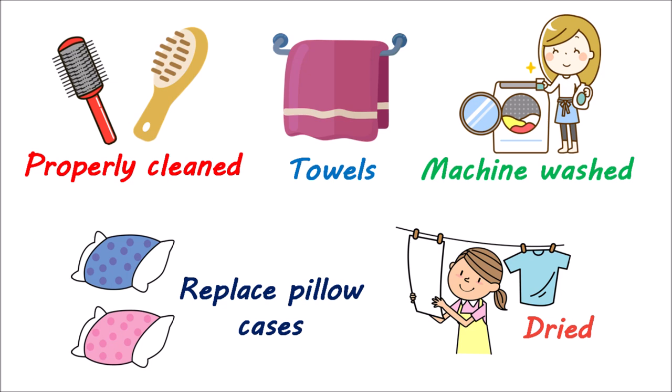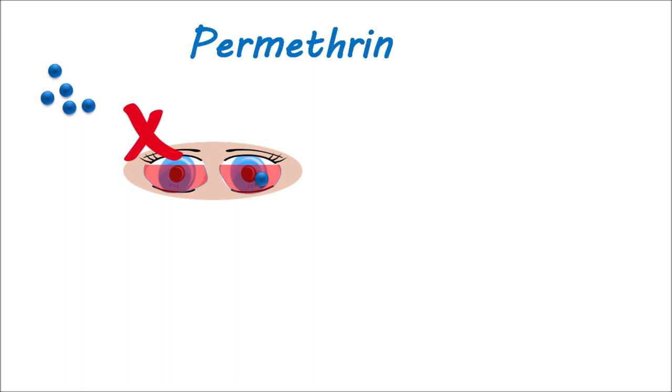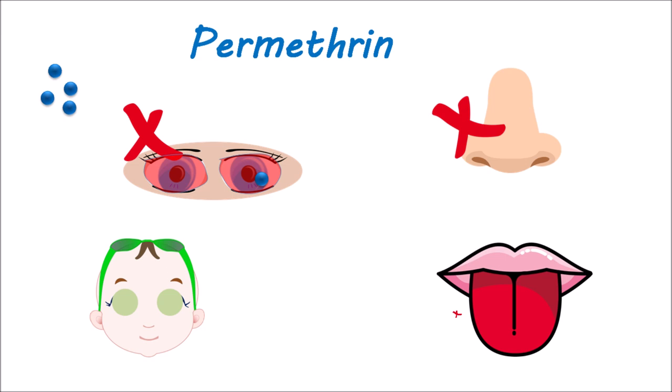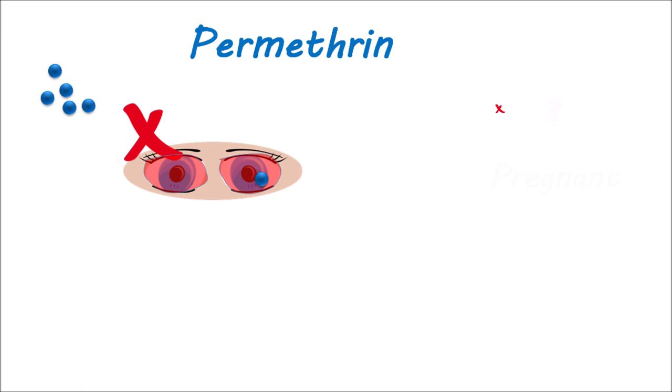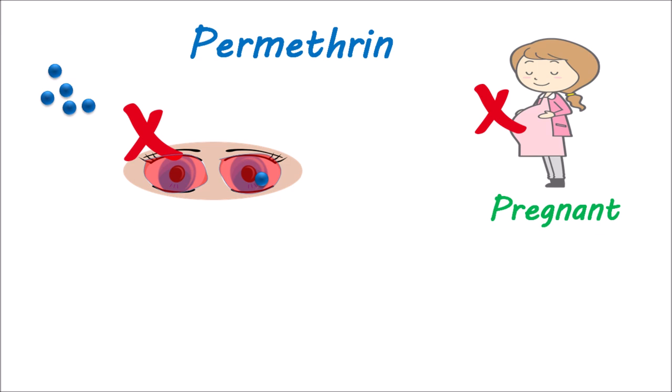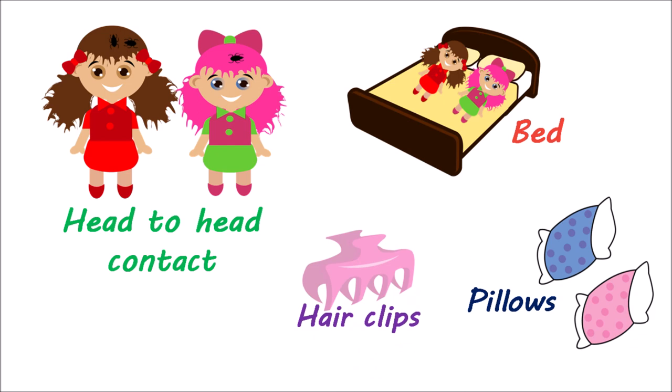Now let's focus on the precautions for the use of permethrin. As permethrin is a neurotoxic substance, it should not be instilled into the eyes, as it increases eye irritation and redness. To avoid accidental contact with the eyes, they should be covered with a towel or washcloth. Similarly, this drug should not be administered into the nose to avoid nasal irritation and sneezing. It should be neither swallowed nor applied to the mouth. Due to the possibility of fetal toxicity, permethrin is not recommended for pregnant women. It can be used topically in both adults and children, but should not be used in infants younger than two months. To avoid reinfestation, permethrin should also be used on family members who are in head-to-head contact with an already infected person, and sharing of bedding, hair clips, and pillows should be avoided.